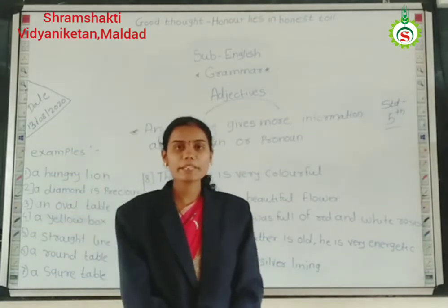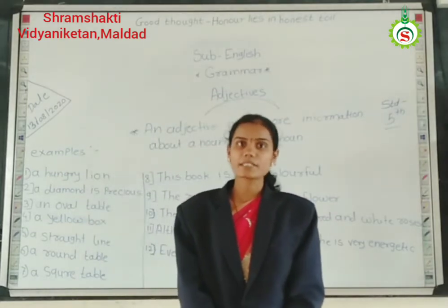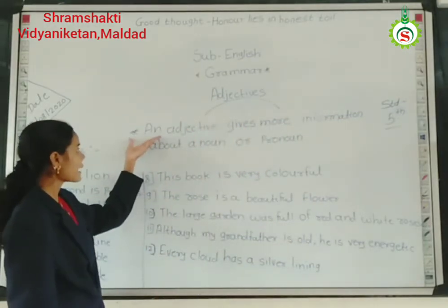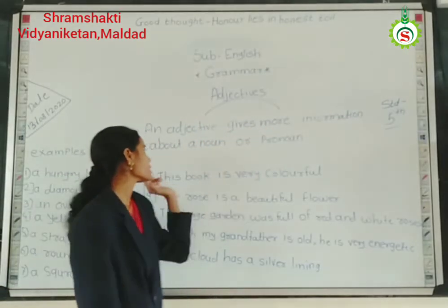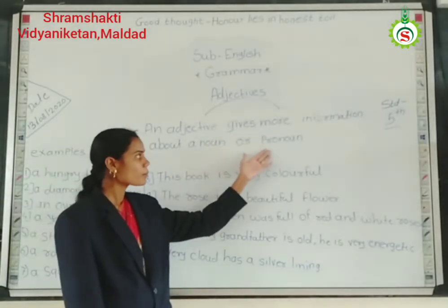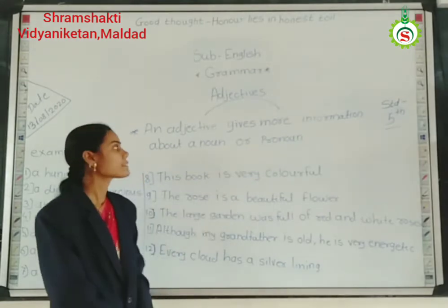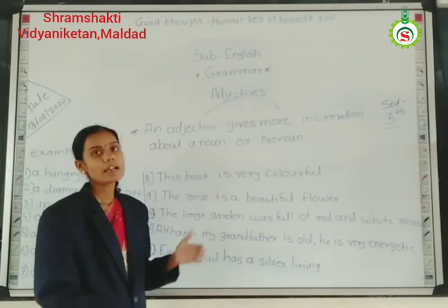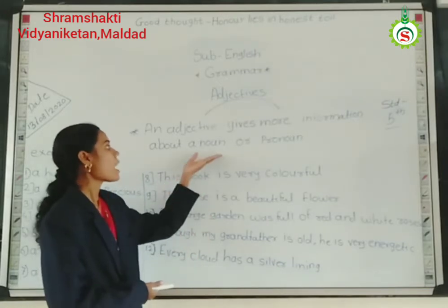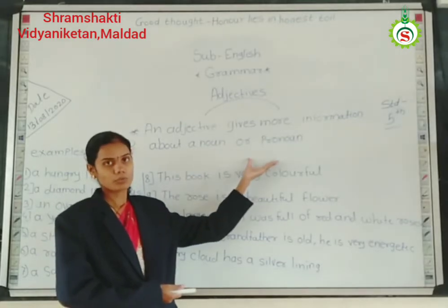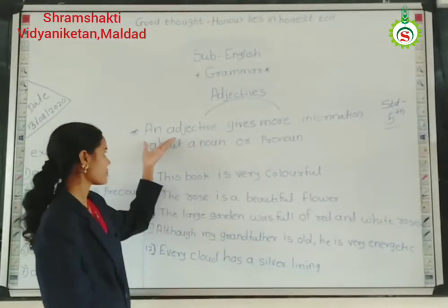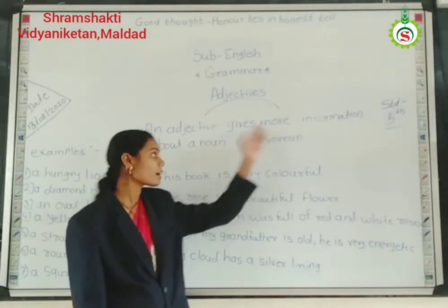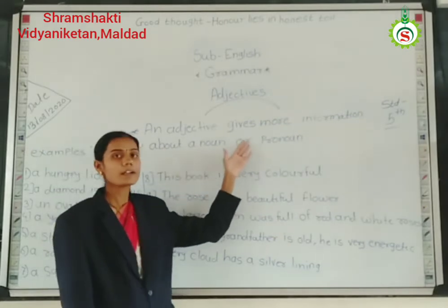So students, what is the meaning of adjective? First we see the definition of adjective. An adjective gives more information about a noun or pronoun. That means in a sentence, an adjective gives more information — more describing — about a noun or pronoun. I'll read this definition once again: an adjective gives more information about a noun or pronoun.